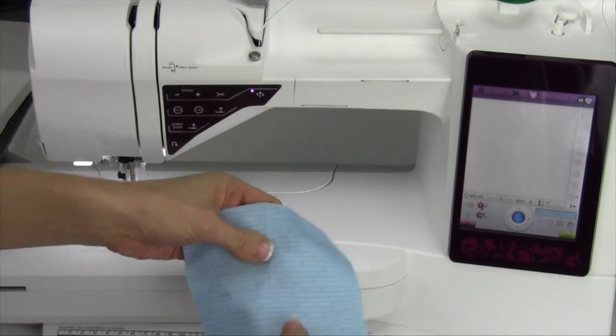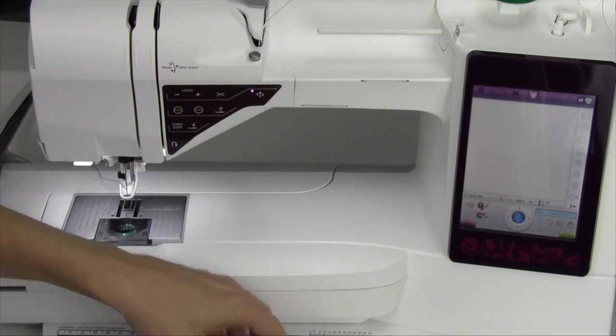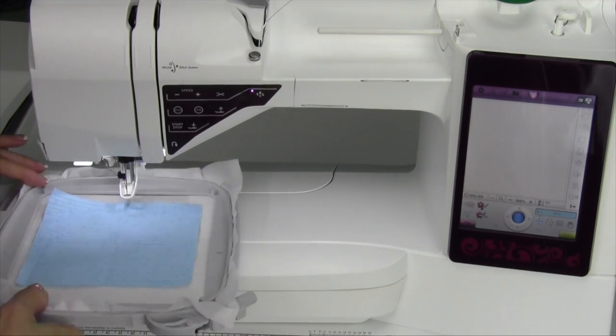I've gone ahead. You can either mark this or even just take and crease and find the center point that we are working with, and I'm going to just slide the hoop on the machine.